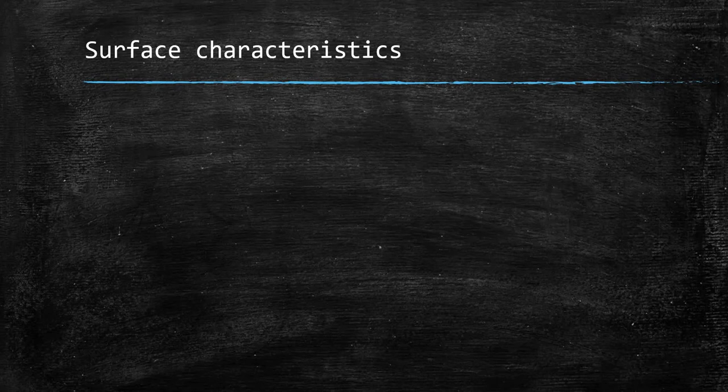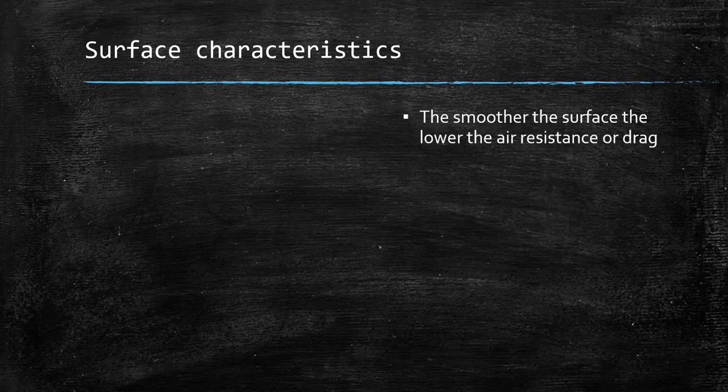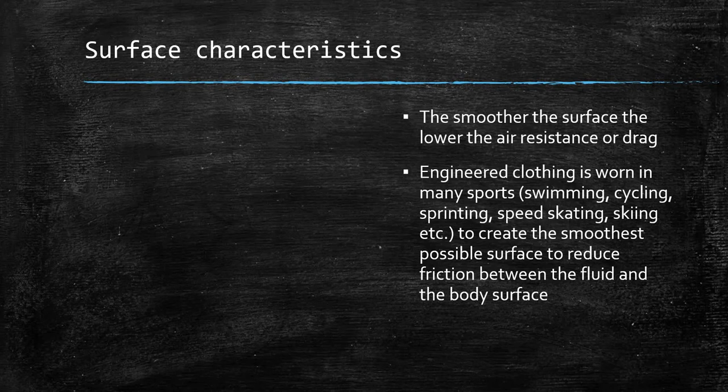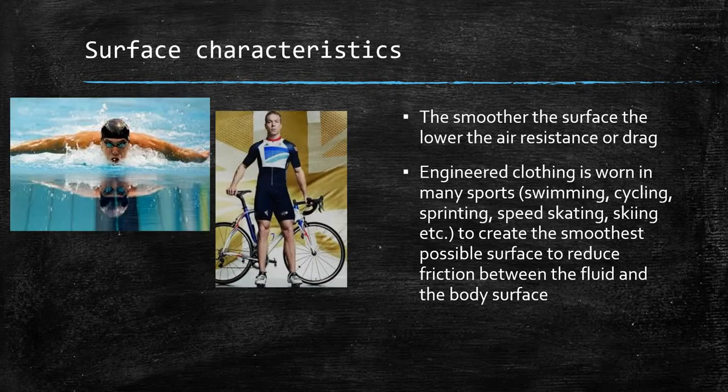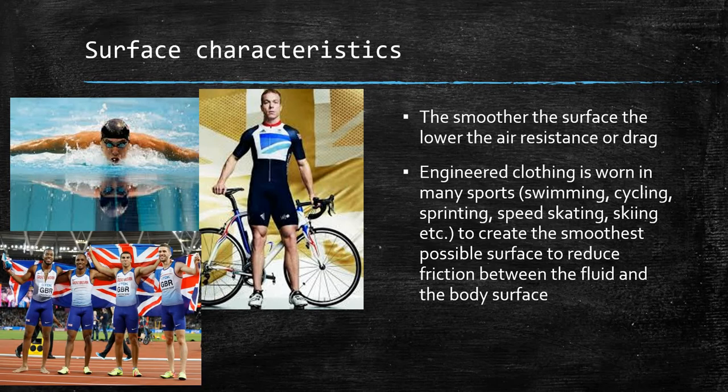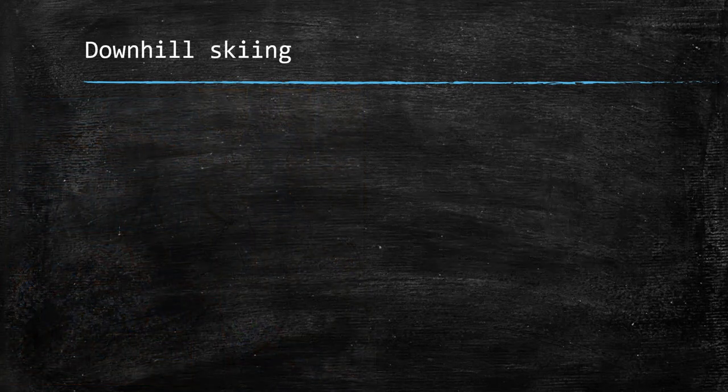The final factor is surface characteristics: the smoother the surface, the lower the air resistance or drag. Engineered clothing is worn across many sports — swimming, cycling, sprinting, speed skating, and skiing — which creates the smoothest possible surface to reduce friction between the fluid and the body surface.